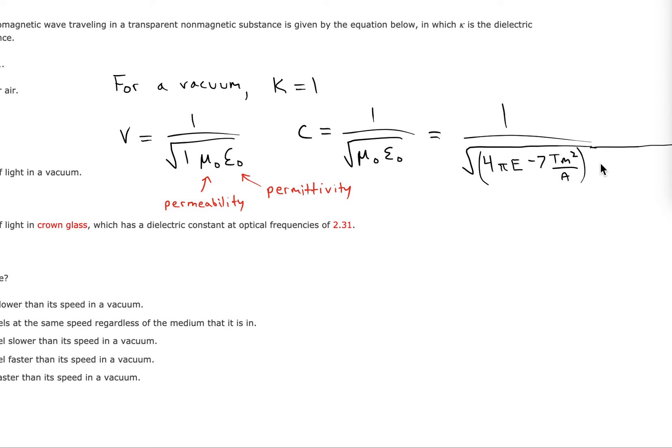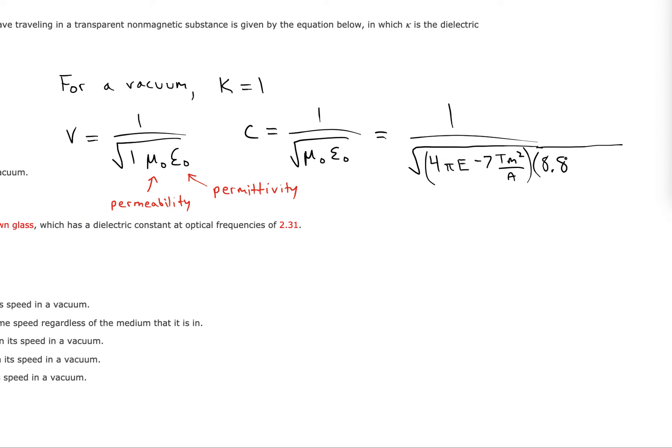And then we'll have over here, it's 8.85 times 10 to the minus 12 coulombs squared per newton meter squared. So let's plug that into calculator.